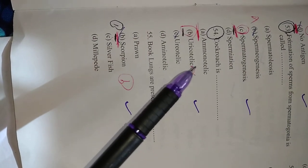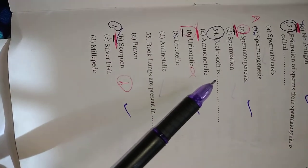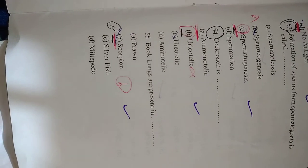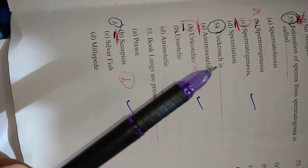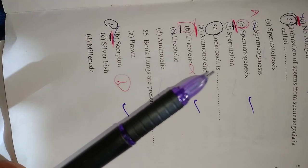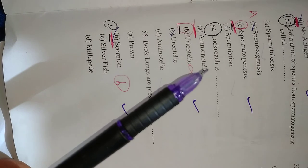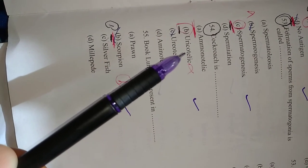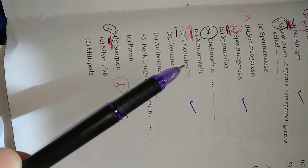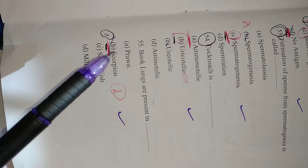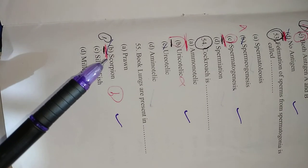Question number 54: Cockroach—the excretory product of cockroaches is uric acid, so they are uricotelic. So right option is B, uricotelic. Question number 55: Book lungs are present in scorpion. So right option is B.